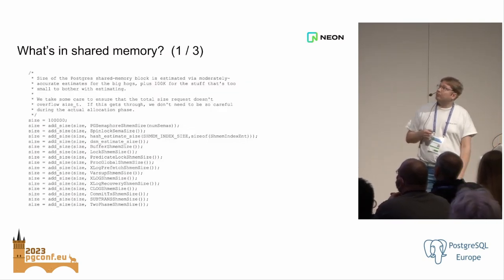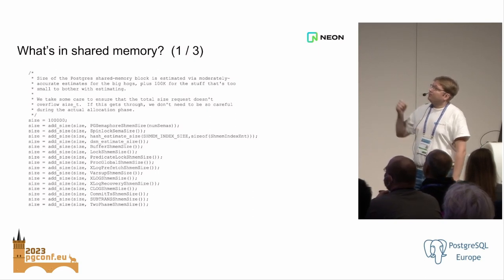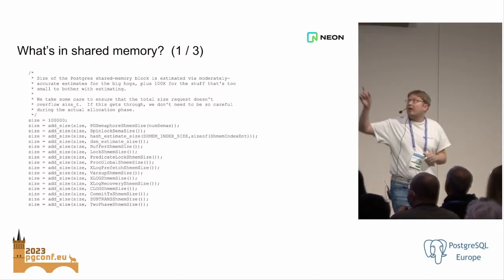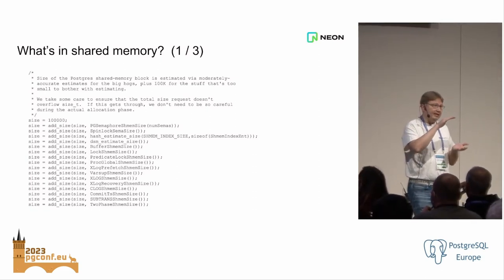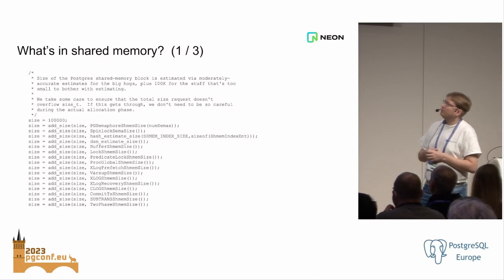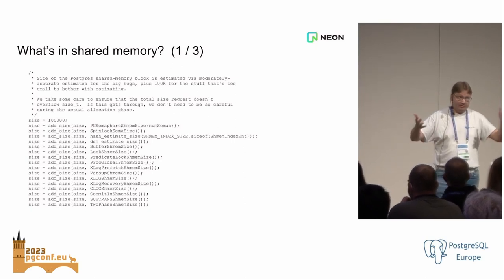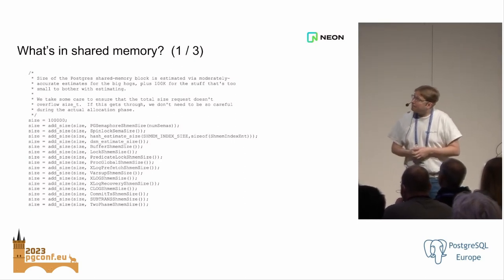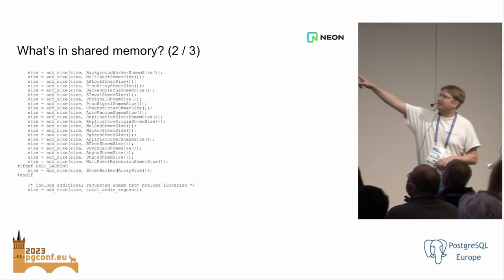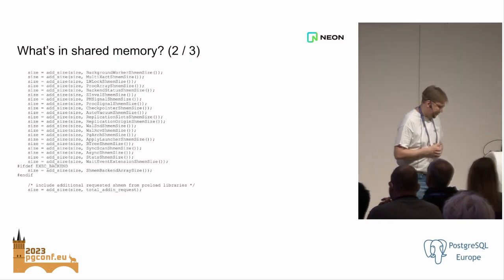Just to give you an idea of what is in the shared memory at the moment — there's a lot of stuff. All of these are shared memory data structures that are fixed size. Each one of these lines represents a piece of shared memory that has a fixed size, and you can't change that size after Postgres has started up. Some are very simple — they just contain a few variables that need to be shared across all processes. Some are more complicated, like shared buffers, which is where most of the memory goes. And at the end you can see: include additional requested shared memory for preload libraries, so there's a little bit of leeway for stuff you add in shared preload libraries.